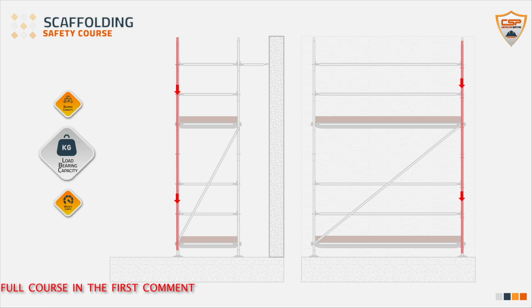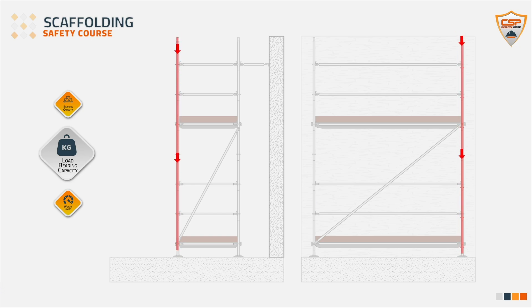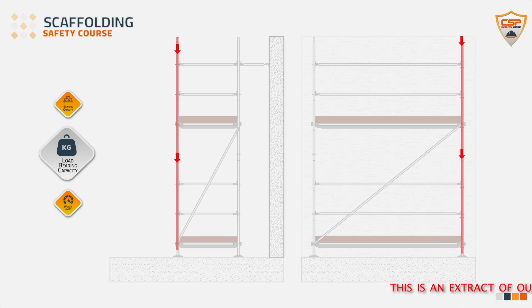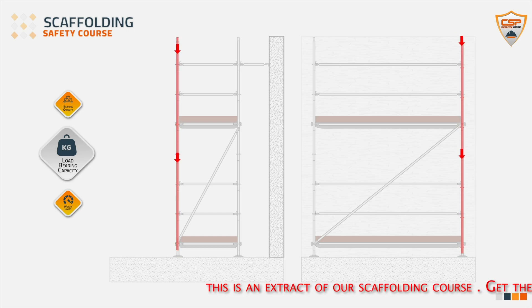The vertical post, or standard, is a crucial component in the scaffolding system, primarily responsible for transferring loads from the scaffold structure to the ground. It bears the weight of the scaffold itself, as well as any additional loads from workers, materials, and environmental forces such as wind. The standards are designed to support these loads by distributing them vertically down to the base plates or footings, which then spread the load over a larger area to prevent sinking or instability.